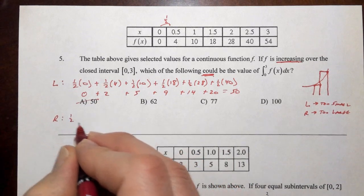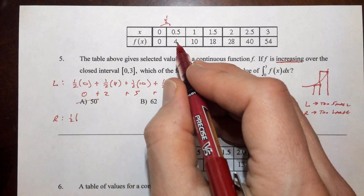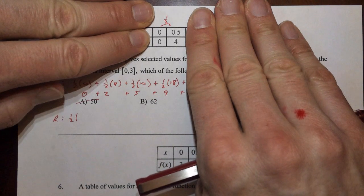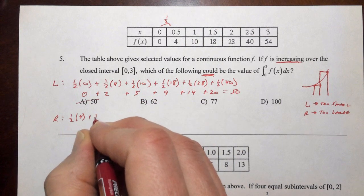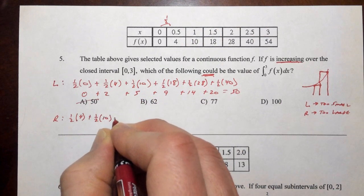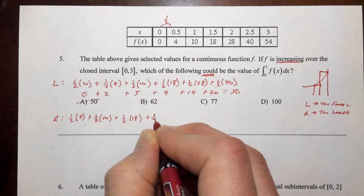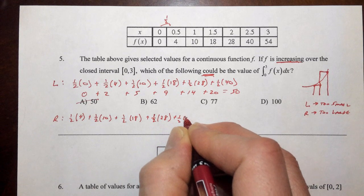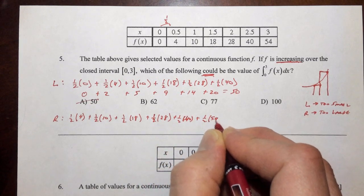So once again, we have the halves. We'll have half times, but this time we're going to use the right numbers. So when we have our first interval, we'll pick the four, not the zero, because we're picking the number on the right. So we have a half times four plus a half times ten plus half of eighteen plus half of twenty-eight plus half of forty plus half of fifty-four.